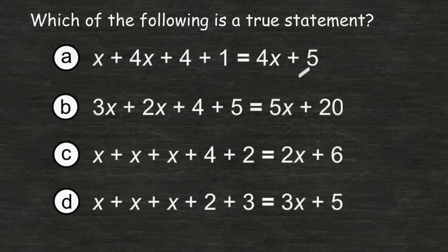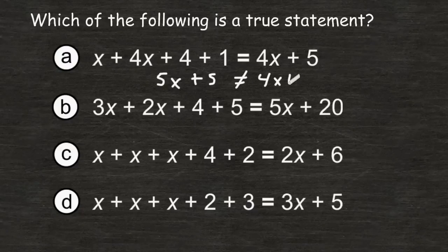On the right-hand side of that equal sign, we have an expression that is already written in simplest form. So let's simplify the expression on the left-hand side of our equal sign. 1x plus 4x is 5x and 4 plus 1 is 5. And 5x plus 5 is not equal to 4x plus 5. Therefore, choice A is not a true statement, so we can eliminate choice A.